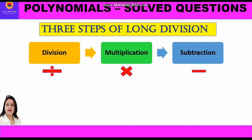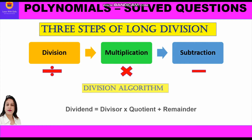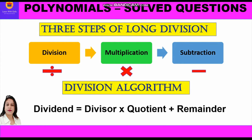Long division of a polynomial is the same as long division of any whole number. The three steps involved in the long division process are: first, division; second, multiplication; and third, subtraction. For checking our answer, we shall use the division algorithm. The equation is: dividend equals divisor into quotient plus remainder.